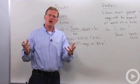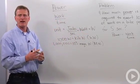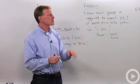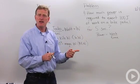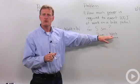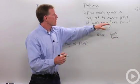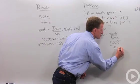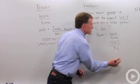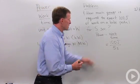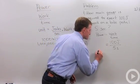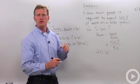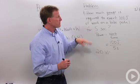Let's look at some examples involving power and its relationship to work over time. Say you're pedaling your bicycle and you want to know how much power is required to exert 100 joules of work on a bike pedal for five seconds. Using power equals work over time, that's 100 joules divided by 5 seconds, which equals 20 watts.